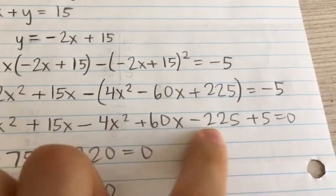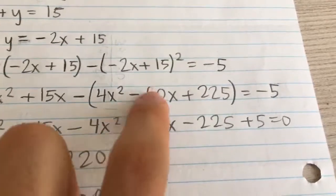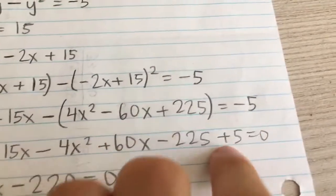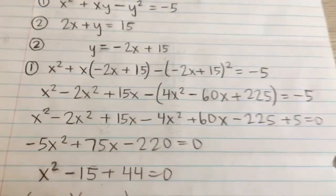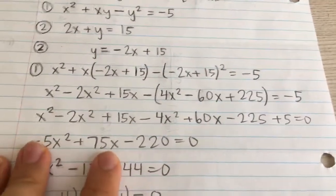There's still that negative sign in front, so let's apply the negative to all three terms. Then I'm going to move the 5 to the other side of the equation, so now we have all the terms on one side.